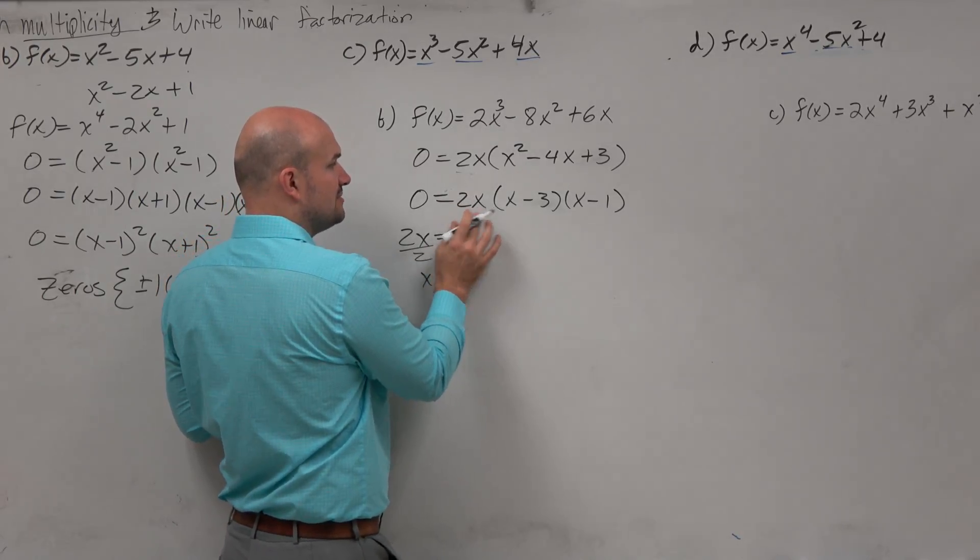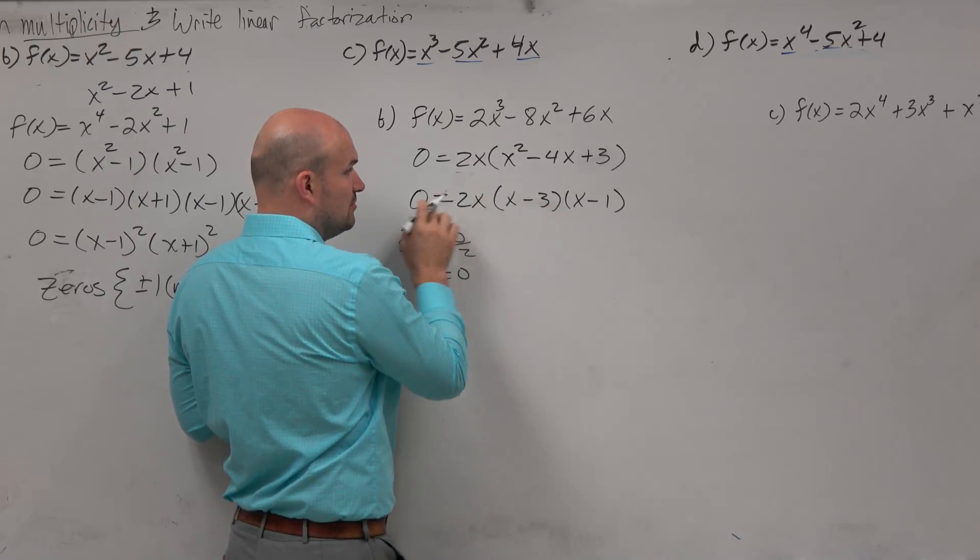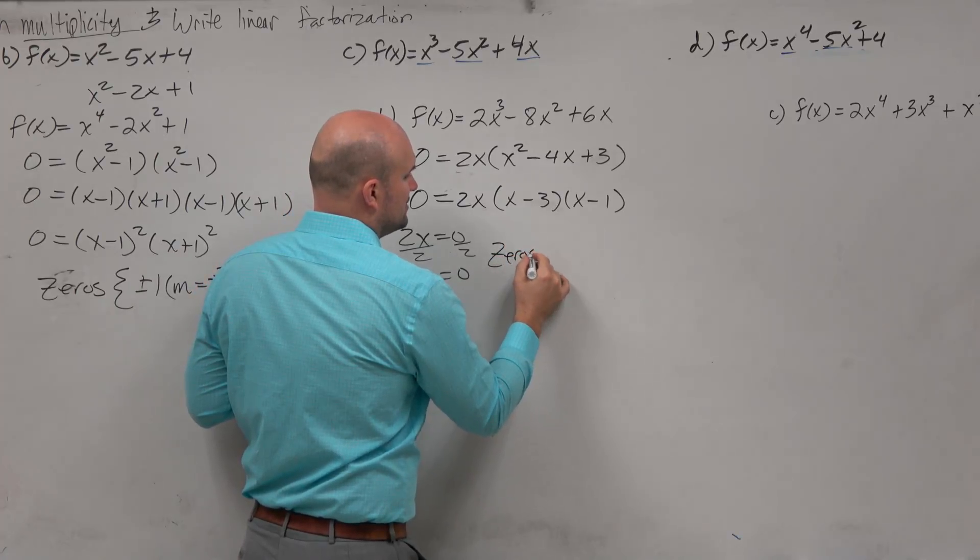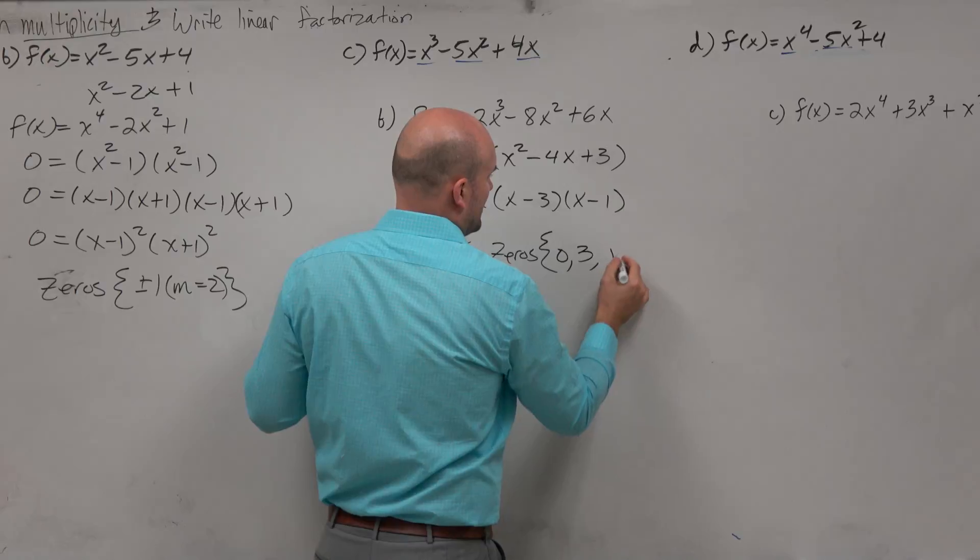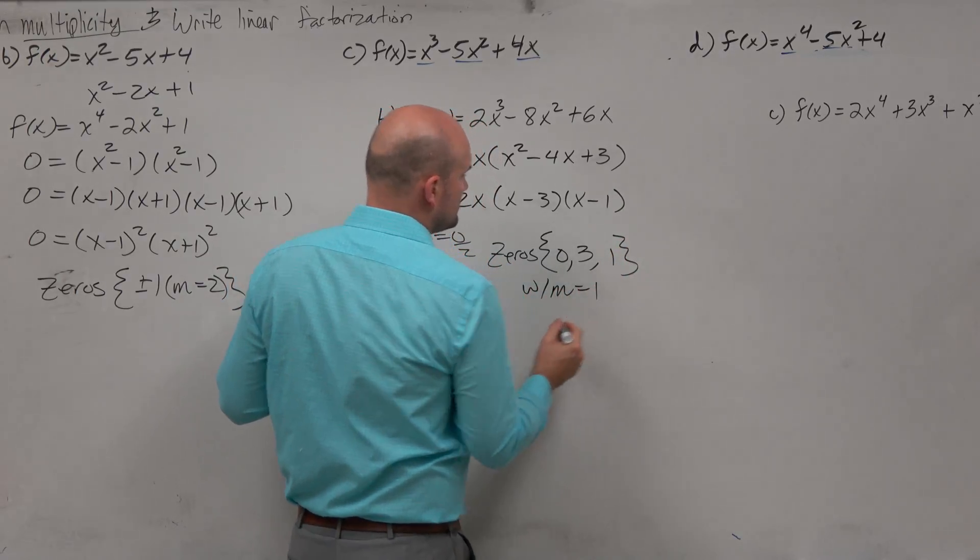You can see the zeros are going to be 0, 3, and 1, because those are the values that make this equation 0, which makes the equation true. So we can say these zeros here, skipping the zero product property, is going to be 0, 3, and 1. And these all have a multiplicity equal to 1.